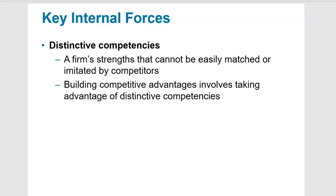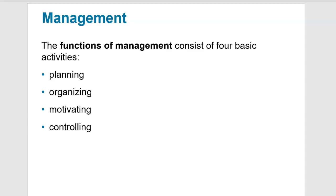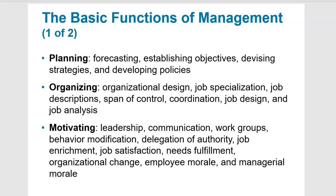Any company that's successful today has to have been good at something to get there because there's so much competition in the world. Having a few things that are uniquely identifiable to your company can really push you to the top. Now let's move on to the functions of management, which consist of four basic activities: planning, organizing, motivating, and controlling. Management is important because these are the people who are going to lead the company.